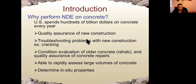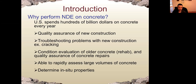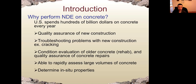For new construction, we can do quality assurance — for example, checking if the strength development of concrete is okay over time, or checking the rebar location, the depth of rebar, or the bonding between the rebar and concrete. Another example is troubleshooting problems with new construction, such as cracking due to shrinkage, thermal expansion, or loading. Or we can do condition evaluation of old concrete, checking internal flaws between old and new concrete, and quality assurance of concrete repairs. We can also do rapid assessment of large volumes of concrete because the instruments for NDT are typically quite small.